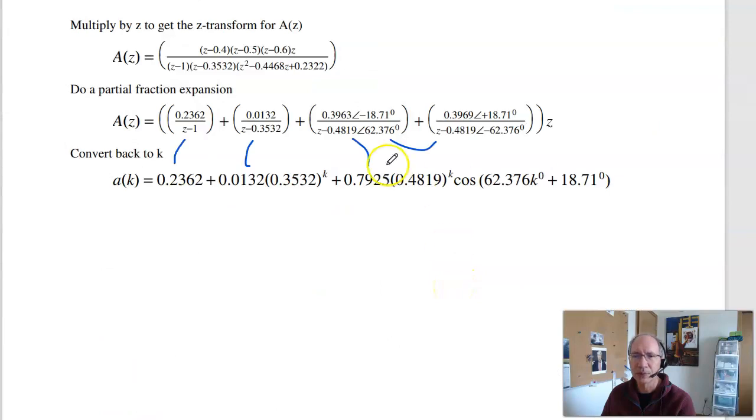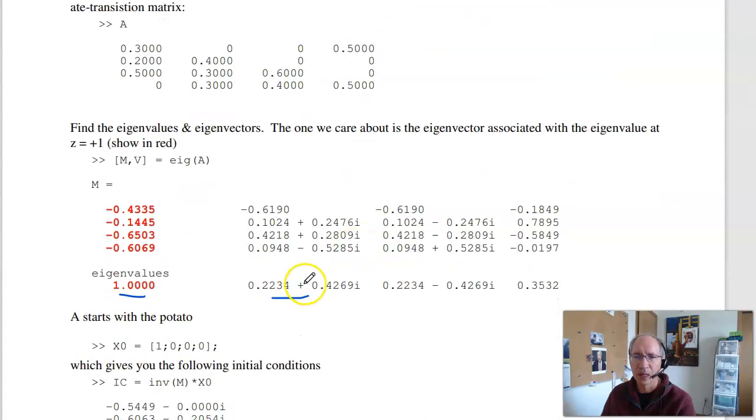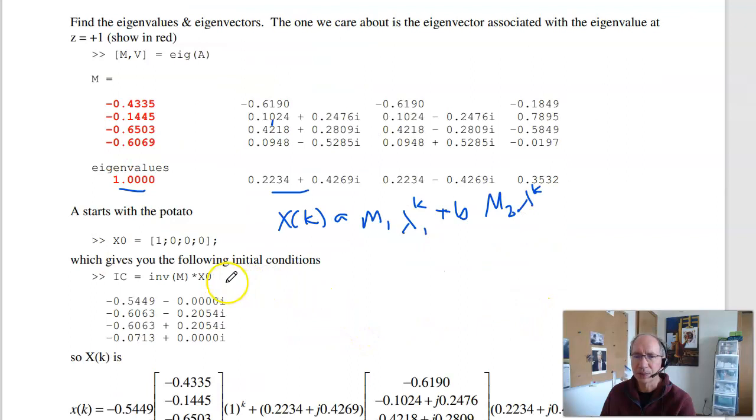I also have eigenvectors. Now, what this tells you is, X of K, I know what the answer is. It's going to be some constant times the first eigenvector times its eigenvalue. Plus another constant times its eigenvector, the second column, times its eigenvalue to the K. And so on and so on. Plug in K equals 0, I just have the initial condition is A, B, C, D times the eigenvectors. To find these constants, just take the inverse of the eigenvector matrix times your initial condition, and that gives you A, B, C, D.